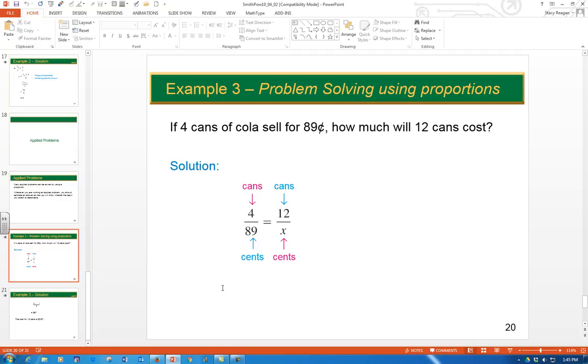Some of you may start to panic because some of these problems will be in sentences or paragraphs because a lot of us hate word problems. But what we're going to do is take a look at this and just calm down, take a deep breath, and read it for what it is. This one says, if 4 cans of cola sell for 89 cents, how much will 12 cans cost? So when we look at this one, we need to say, how can I turn this into a proportion?